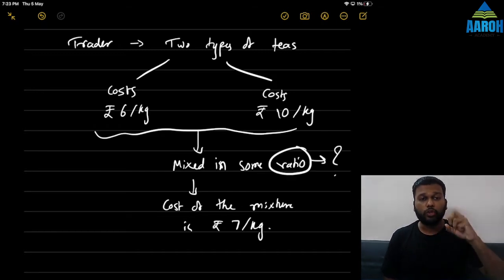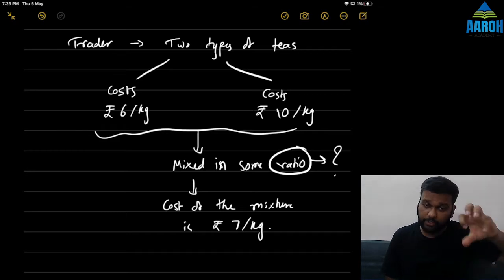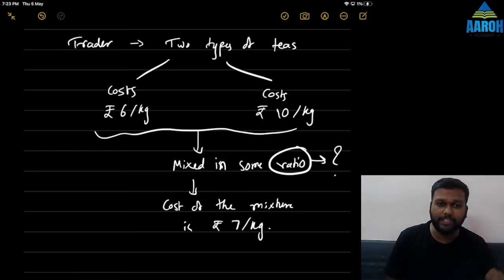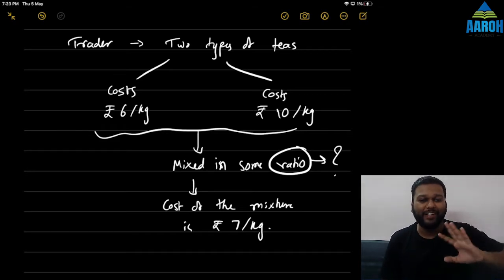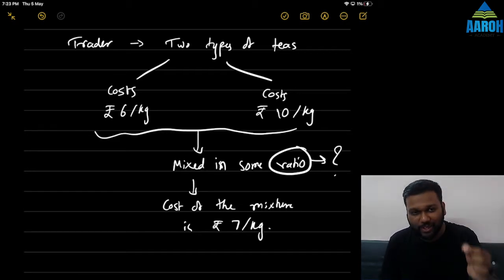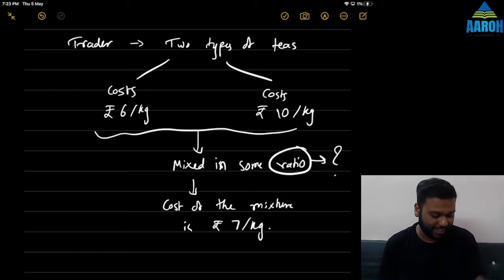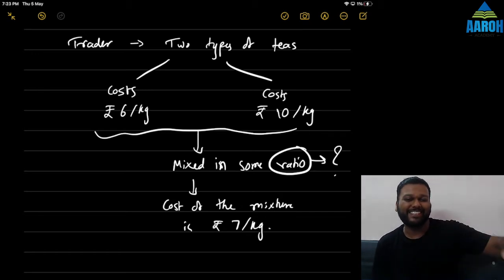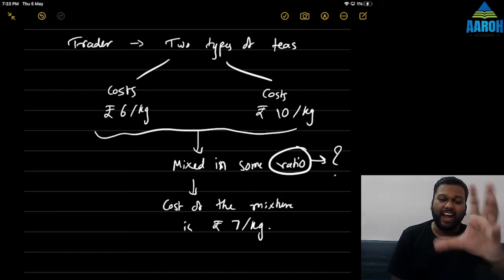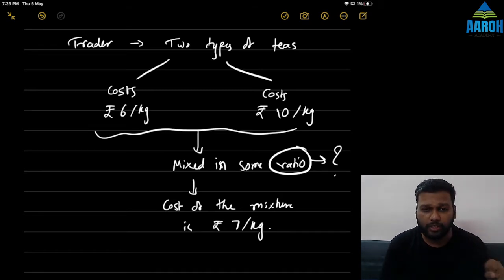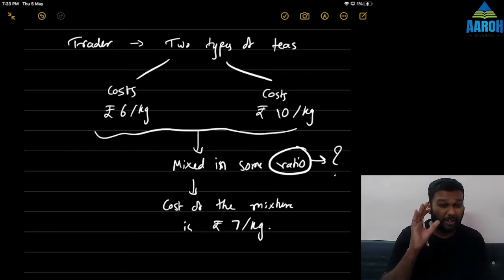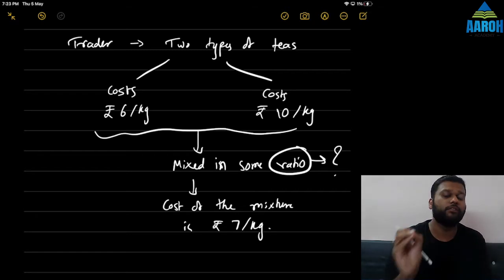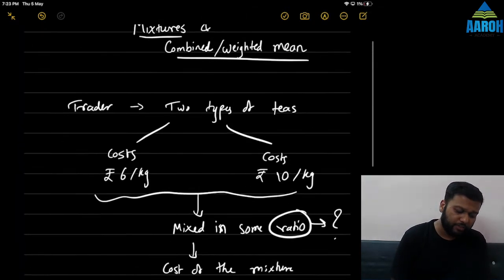So there are two types of teas: one costs ₹6 per kg, one costs ₹10 per kg — obviously no tea is going to cost ₹6 per kg but it's a hypothetical example. Their mixture costs ₹7 per kg. What is the ratio? This is a question of mixture, weighted average, or combined average — all three are the same concept.